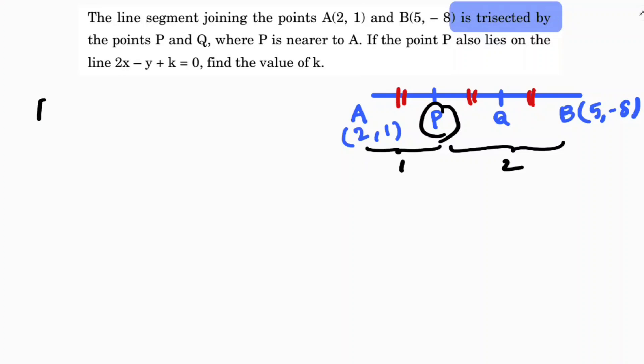To find P, the formula is section formula: (m1·x2 + m2·x1)/(m1 + m2), and similarly for y-coordinates (m1·y2 + m2·y1)/(m1 + m2).